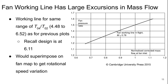If we look at the fan working line off design, we can see quite large variations in mass flow — down at least 30% to 35% over the practical range of T0.4 over T0.2. Up here would be at 6.52, over here would be at 4.48, and design is 6.11. You'd have to superimpose this on a fan map to get the rotational speed variation.